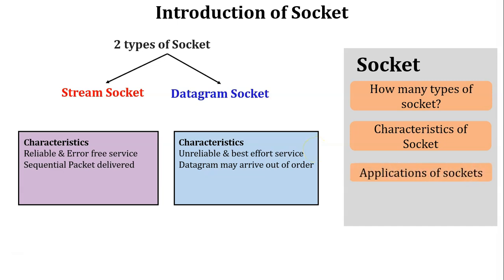Next, applications of sockets. Based on characteristics, the applications of stream socket are Telnet, SSH, HTTP, and HTTPS. Stream socket applications are based on request-and-response behavior, meaning a connection is established before sending data, then data is sent, and then the connection is terminated.